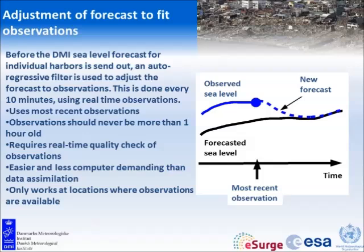The Dutch are actually assimilating sea level observations, but we do not do that in Denmark. Instead we take our unassimilated model and adjust it to the observations — we simply move the forecast up to fit the most recent observations. That's a quick-and-dirty solution, but it actually works quite well in reality, though unfortunately only at locations where you have tide gauges. Since we have tide gauges in all the harbors, that works out for Denmark.